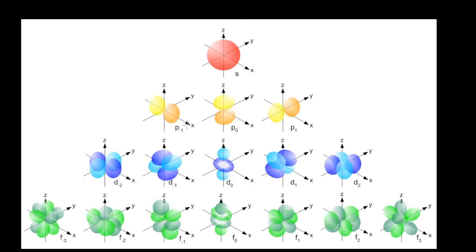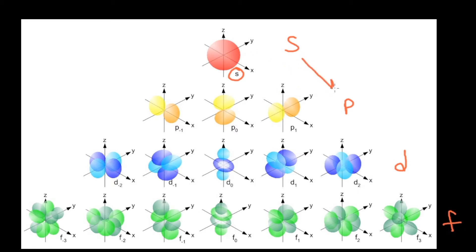Here is what the quantum sub shells look like. The first one is called S — it's just a sphere, so this is the S sub shell. The next ones are in 3D depictions coming from three different orientations — these are the P sub shells, and there are three different ones. This is the D sub shell in five dimensions, and then the F sub shells. The energy levels go from S to P, P is higher than S, D is higher than P, and F contains the highest level of energy.